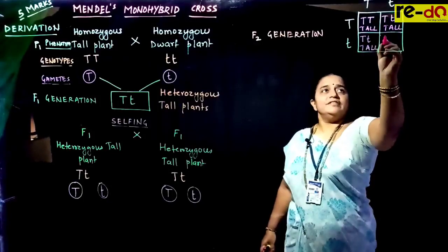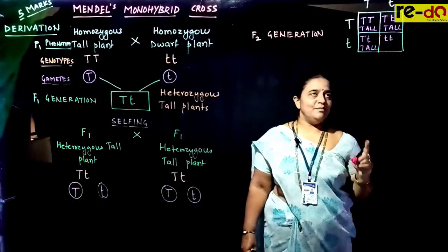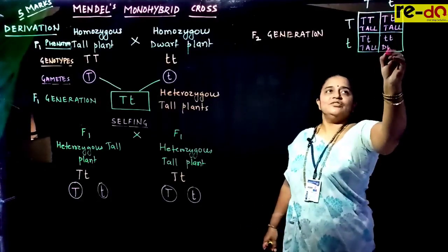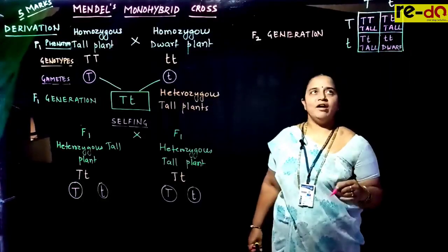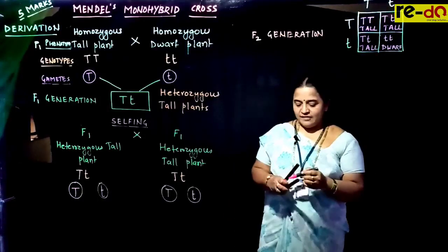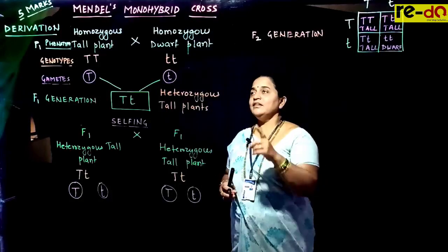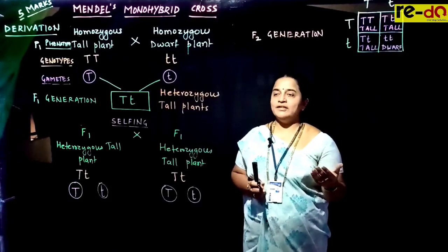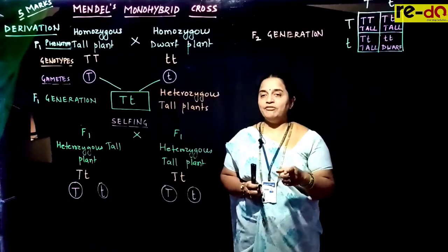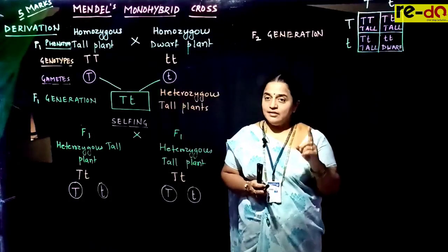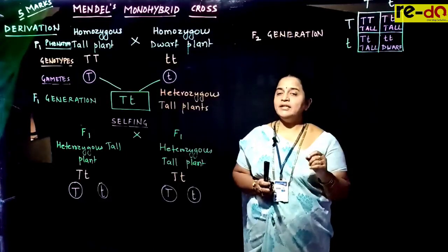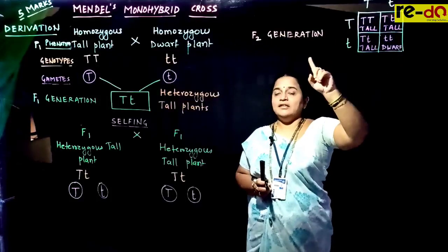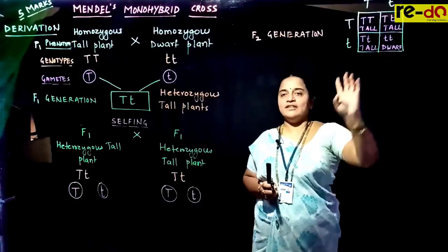If the recessive alleles come together in a pair, they express in homozygous condition — so tt is expressed as dwarf. As per the law of dominance, when two traits are brought together for hybridization, the trait expressed is dominant and the suppressed trait is recessive. The dominant trait is expressed in both homozygous and heterozygous conditions, but the recessive trait is always expressed only in homozygous condition.